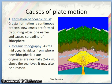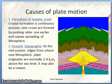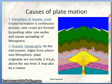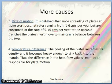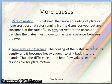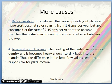Causes of plate motion include: formation of oceanic crust — crustal formation is a continuous process where new crust is formed by pushing older crust aside, causing spreading of the lithosphere. Oceanic topography also plays a role, as mid-oceanic ridges where new lithospheric plates originate are normally 2 to 4 km above sea level. Regarding rate of motion, spreading at ridge crests occurs at 1 to 6 cm per year but plates are consumed at 5 to 15 cm per year at oceanic trenches, so plates must move to maintain balance.